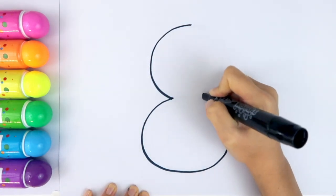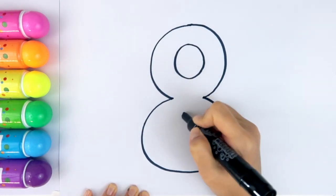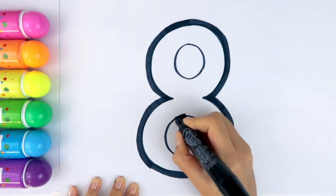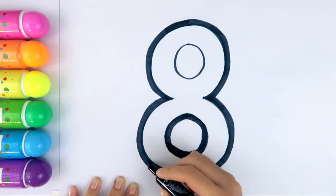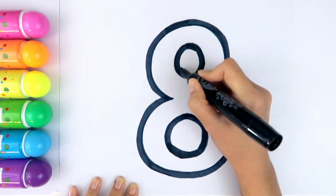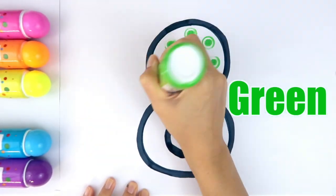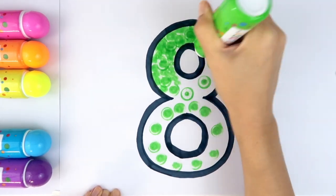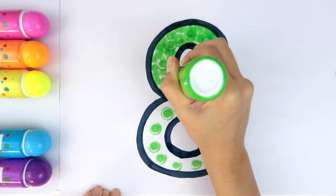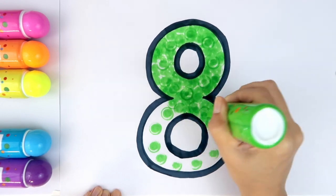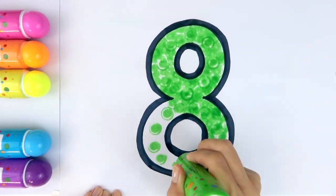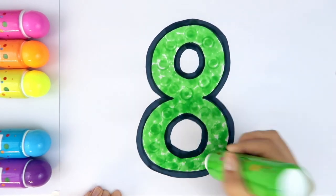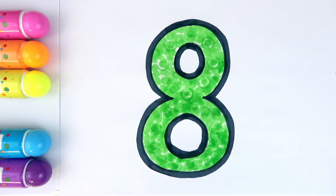Draw a snowman with two circles. What number is this? Number eight. Here comes my favorite color, green. Eight.